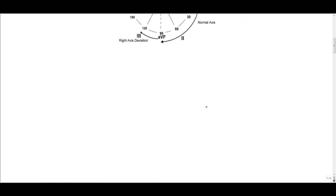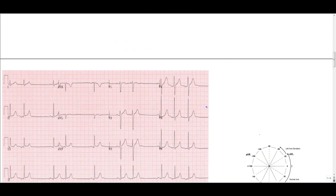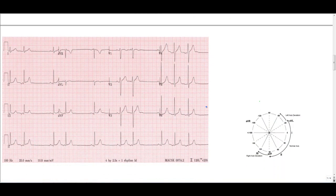Now let's look at our first example of an EKG. So we have an EKG here. And first let's look at lead 1. Lead 1 is positive. So we know that it must lie in the right half of the semicircle.